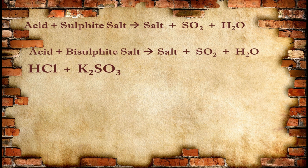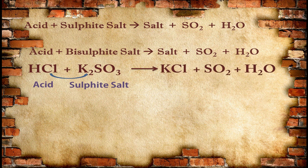Let's see the example. HCl is an acid and K₂SO₃, potassium sulfite, is a sulfite salt. Through the same method, the formula of salt can be written as KCl, sulfur dioxide formula is SO₂, and water formula is H₂O. KCl is the salt — potassium valency is +1, chloride valency is −1, so the formula is simply KCl. But you need to balance this equation. Potassium is not balanced, so write 2 with KCl and 2 with HCl. Now it is balanced.